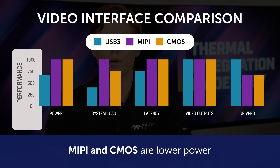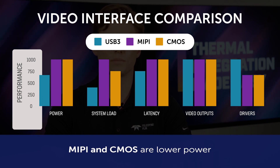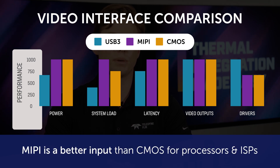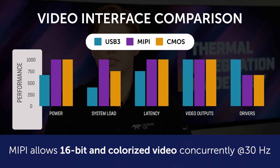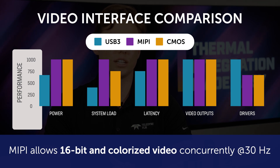MIPI and CMOS are lower power but require driver integration. MIPI is a better input than CMOS for most processors and ISPs. MIPI allows 16-bit and colorized video concurrently at 30 Hz, which is ideal for radiometric applications requiring both radiometric data and an image for display.